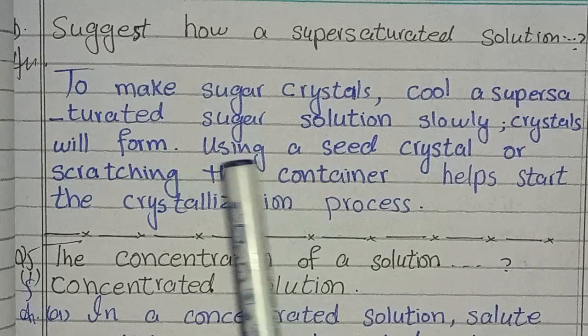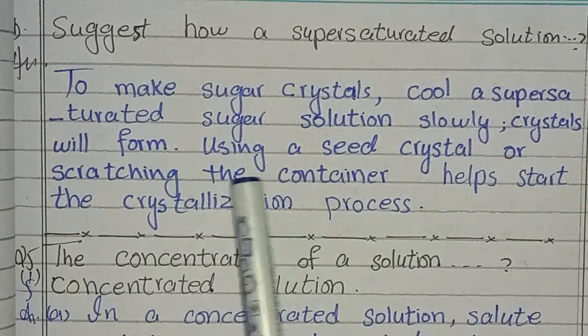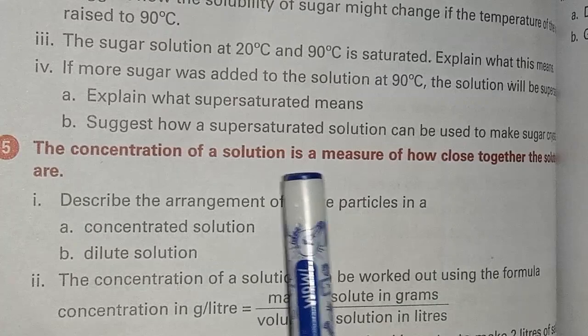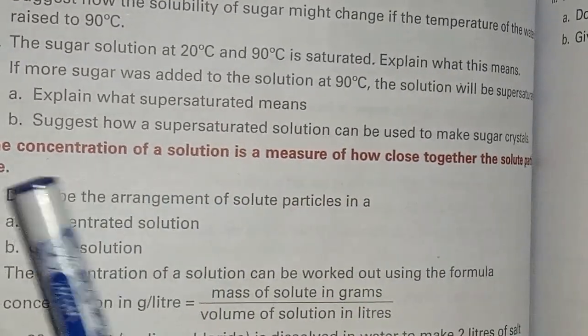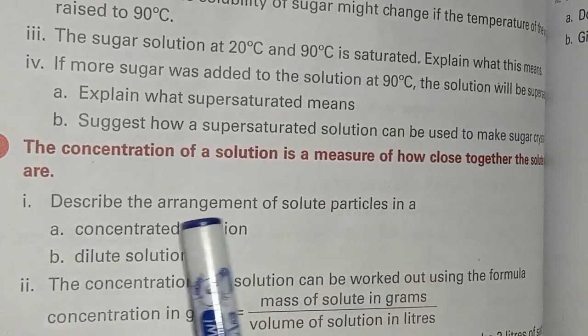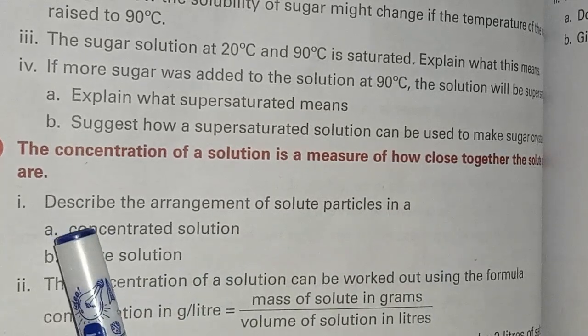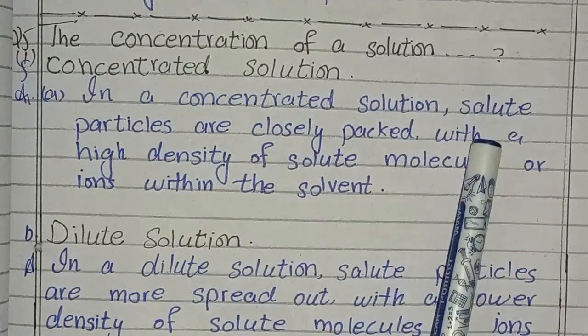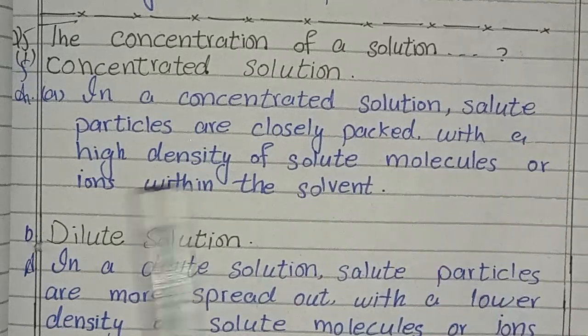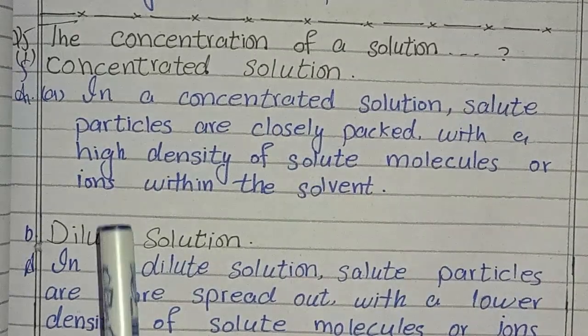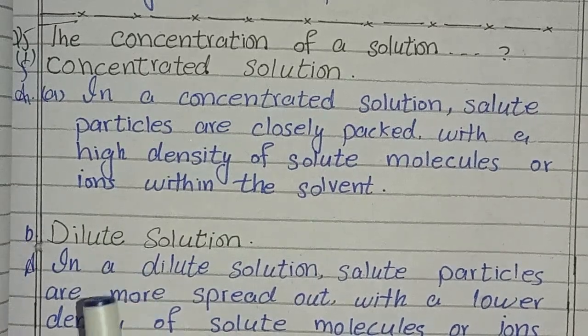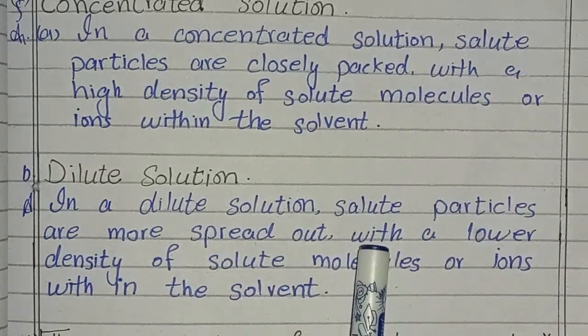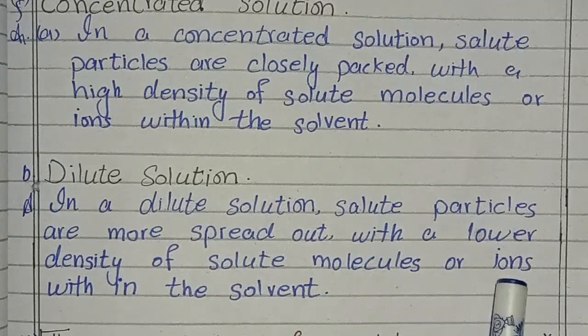Fifth question: The concentration of a solution is a measure of how close together the solute particles are. First question: Describe the arrangement of solute particles in A) concentrated solution, B) dilute solution. Concentrated solution: In a concentrated solution, solute particles are closely packed with a high density of solute molecules or ions within the solvent. Dilute solution: In a dilute solution, solute particles are more spaced out with a lower density of solute molecules or ions within the solvent.